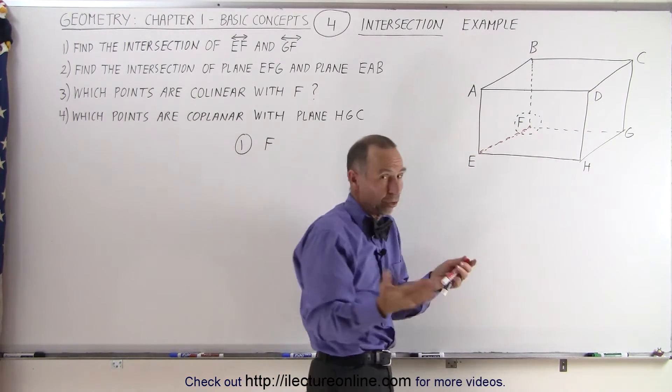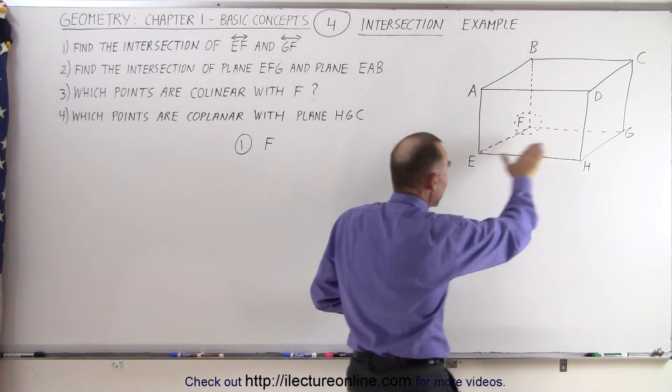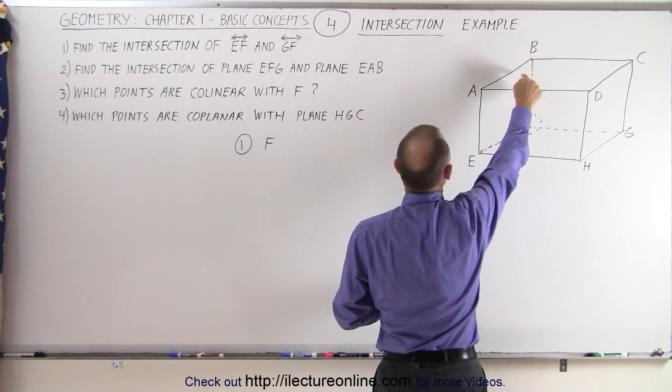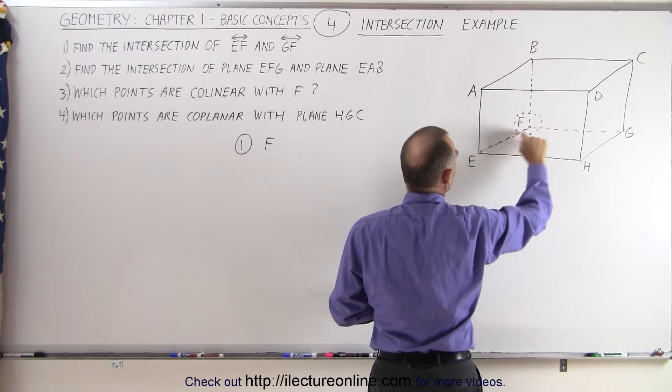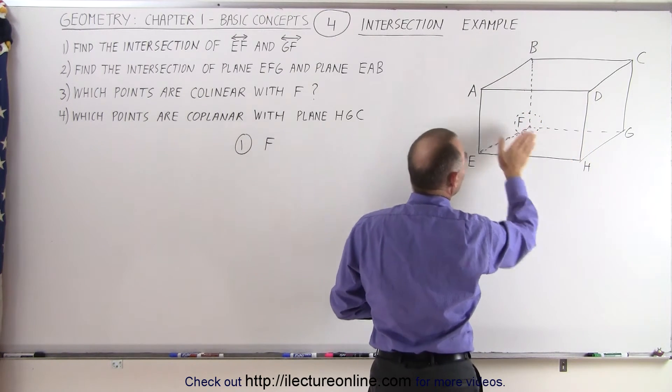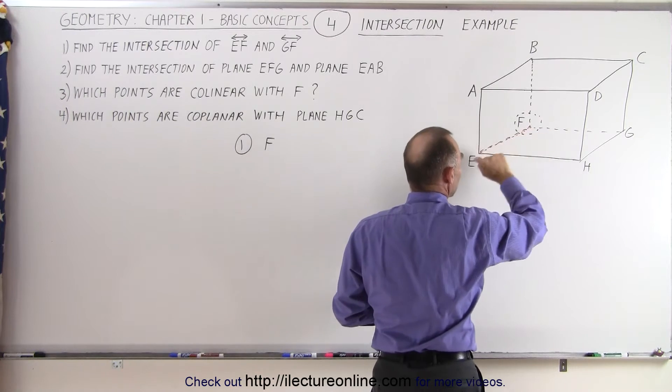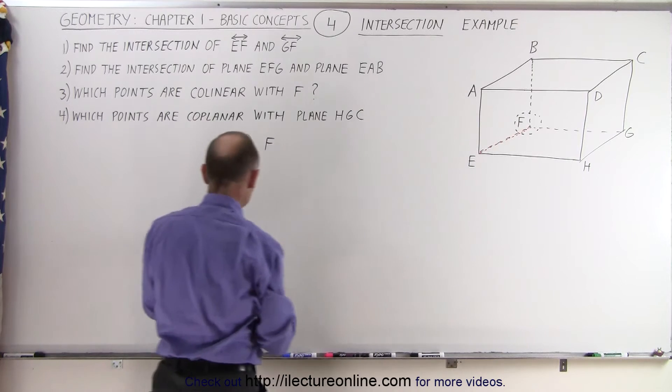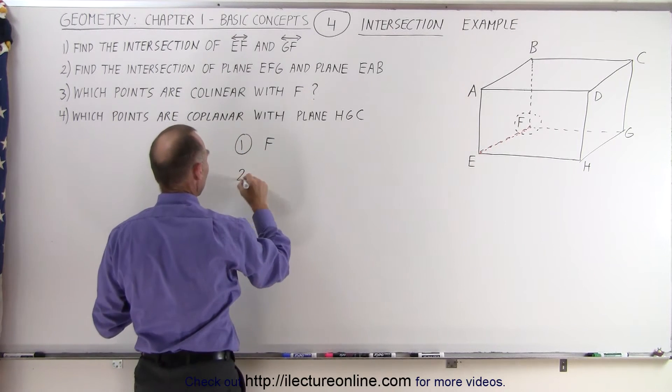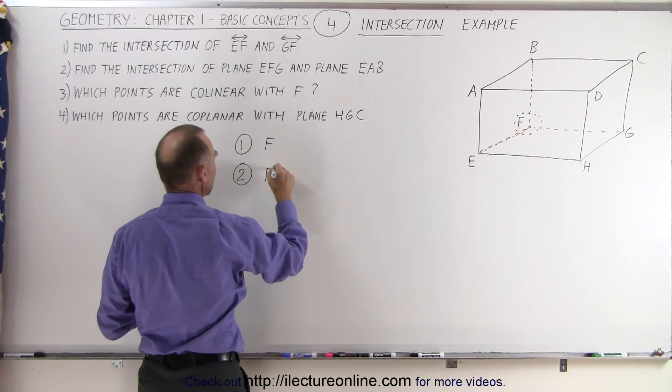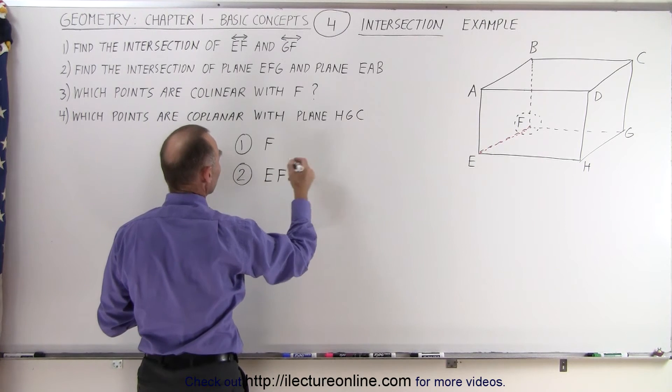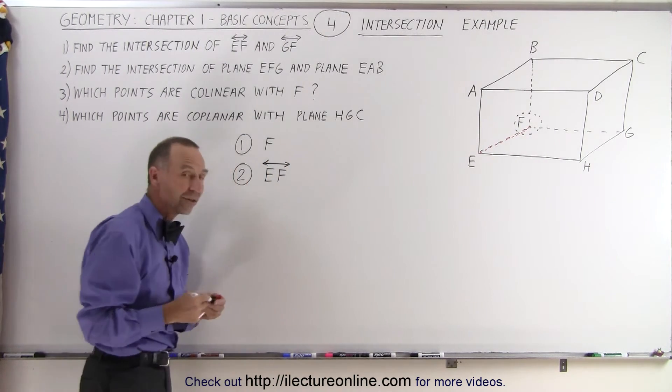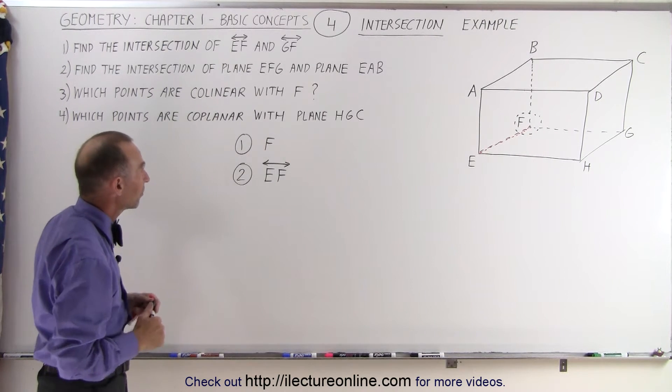We didn't include H, we don't have to, because you only need three points to define a plane. And then we have this plane here on the side, EAB. We didn't include F, but you can see clearly that the bottom and the side intersect along this line right here. And assuming it goes infinitely this way and infinitely this way, we can then define the answer as the line EF. And since we're looking for a line, we have to put a little arrow on top with arrows on both sides. So that is the intersection between those two planes.